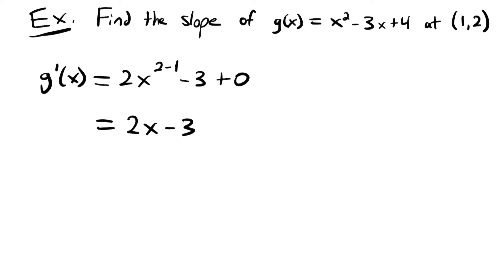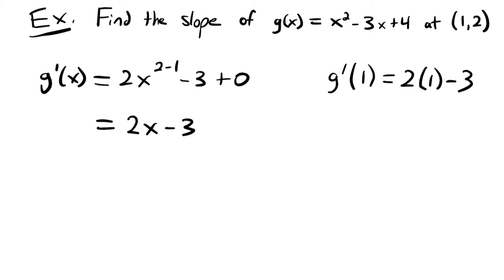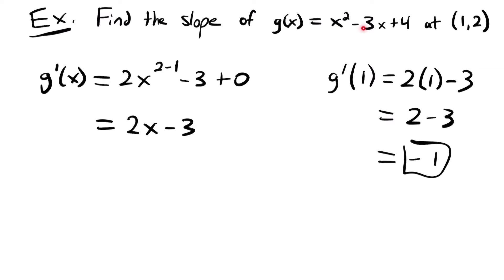Now we have our derivative 2x minus 3, and we want to know the slope at the point (1, 2). We're given the y value but we don't really care about that — we just want to plug in the x value. So g prime of 1 equals 2 times 1 minus 3, which equals 2 minus 3, which equals negative 1. So the slope at the point (1, 2) on this function is negative 1.